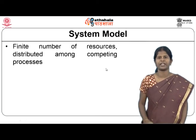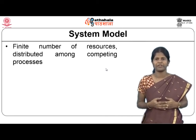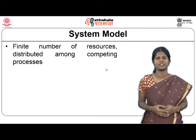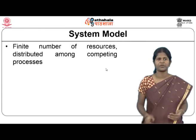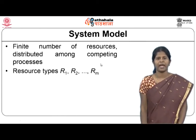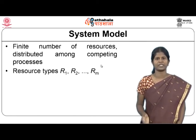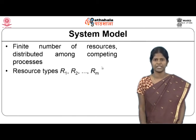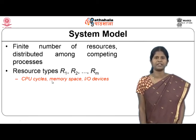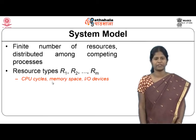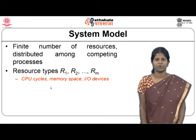Looking at the system model, we assume a finite number of resources distributed among competing processes. There are resource types R1, R2, up to Rm. Resource types can be CPU cycles, memory space, I/O devices, or printers, for example. Each resource type has many instances — for example, a printer resource type may have 4 or 5 instances.